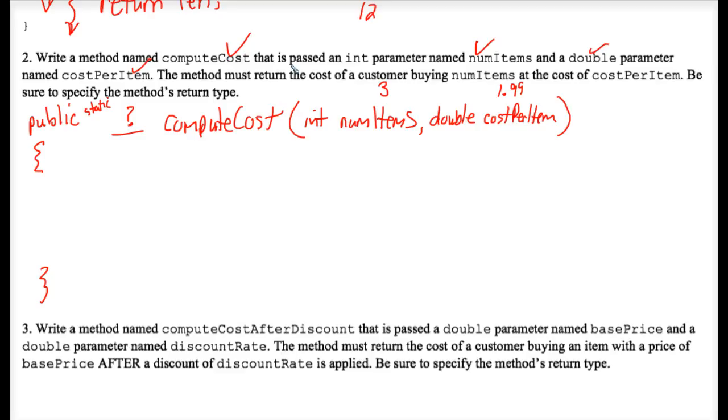You do not hardwire this algorithm for those specific numbers. We have to implement the method now. We must compute and return the cost of buying numitems at cost per item. Well, that's simple math. Anybody who goes to a store with their own money knows that you just take the number of items that you bought times the cost per item.